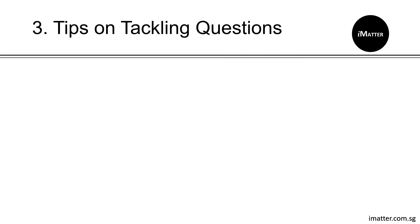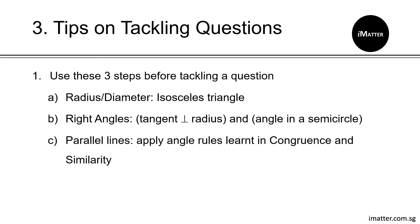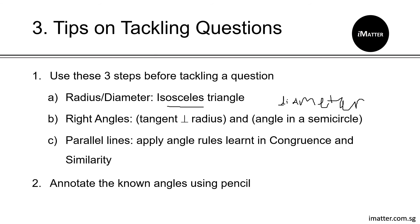Here are some tips when tackling circle properties questions. Use these three steps: first, find the radius or diameter — identifying the radius helps identify isosceles triangles, and the diameter is important for finding right angles in a semicircle. Right angles are also associated with tangent perpendicular to radius or the perpendicular chord bisecting from the centre. Second, find parallel lines to help apply angle rules from congruence and similarity. Lastly, annotate your known angles using pencil, since using correction pen or correction tape makes diagrams very messy when you need to rewrite.